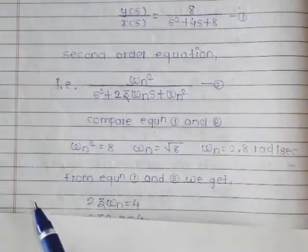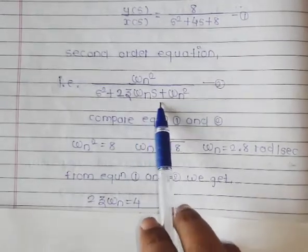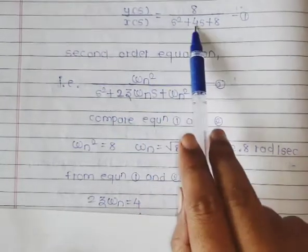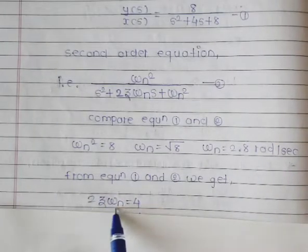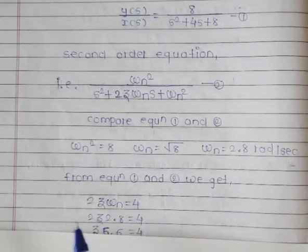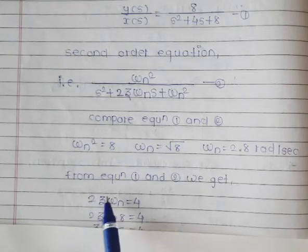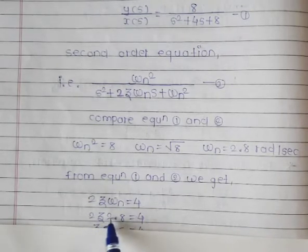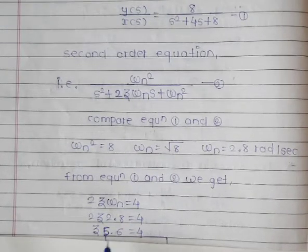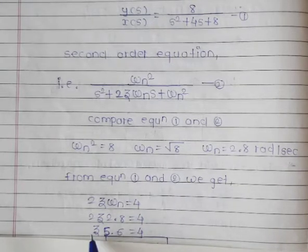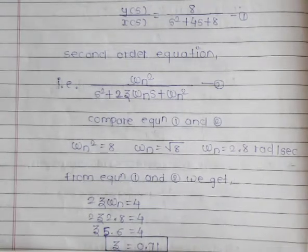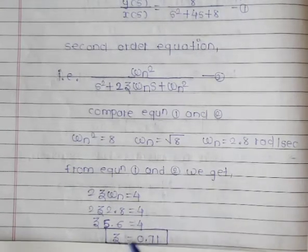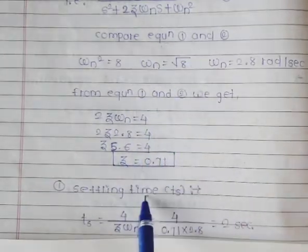From comparing equations 1 and 2, we see that 2ζωn = 4. We already found ωn = 2.8 rad/s, so putting this value in: 2ζ × 2.8 = 4, which gives 5.6ζ = 4. Dividing both sides, ζ = 4/5.6 = 0.71. So both parameters are now found.